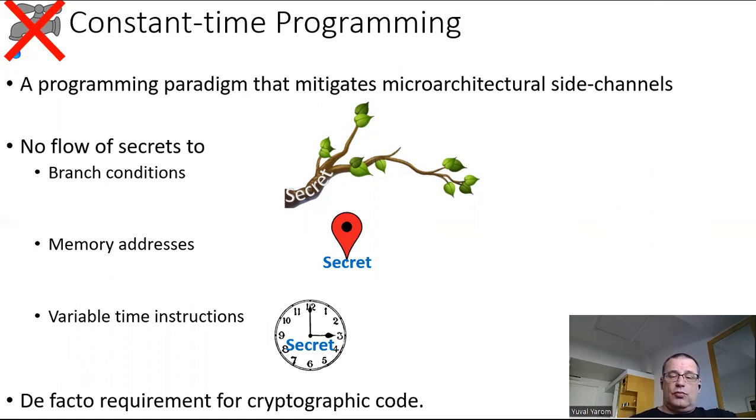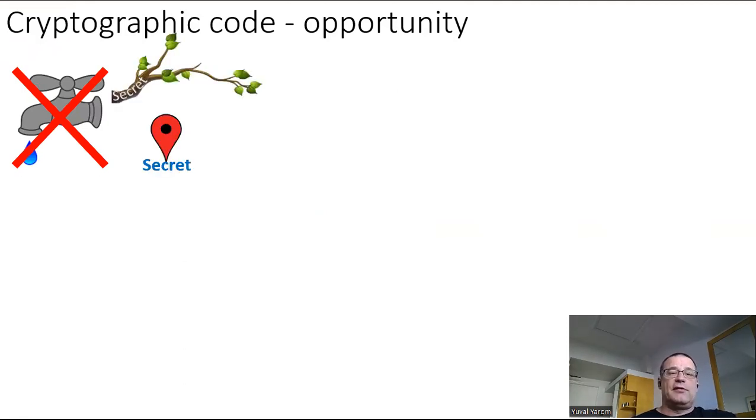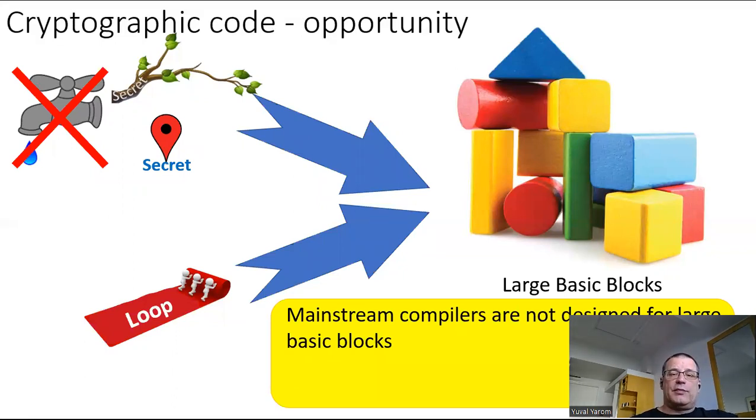These same requirements also present us with an opportunity. If our code is leak-free, it's constant time code. It doesn't have branches that depend on secrets. It doesn't have memory accesses that depend on secrets. And it has its loops unrolled. What that means is that we have large basic blocks because we have fewer branches, we have loops unrolled, we don't have even intricate memory access patterns. So we have large sequences of instructions that basically process data and do nothing beyond that. And large basic blocks are a problem for mainstream compilers because they are not typical in most programs. They're typically in cryptographic code, but not in any other programs. And most compilers are not designed to optimize cryptographic code.